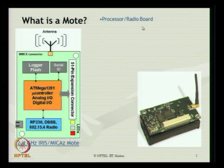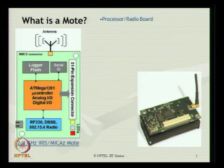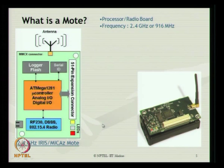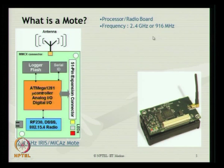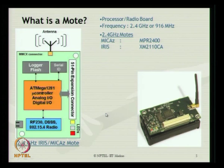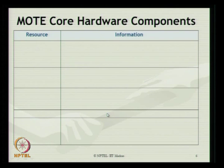The processor radio board physically looks like this, with an antenna attached to it. The frequency of operation varies from 2.4 GHz to 916 MHz, and two different configurations are shown.